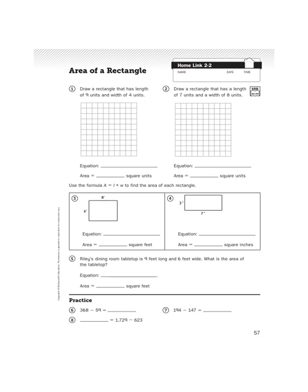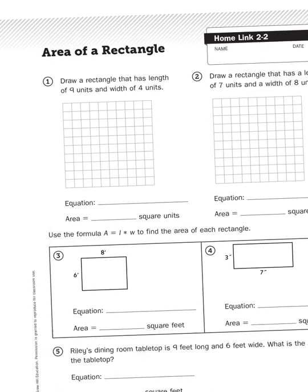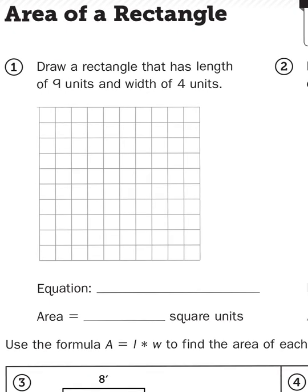Let's take a look at problem number one. It says draw a rectangle that has length of nine units and width of four units. So as you can see there's a grid of lines set up for you conveniently.